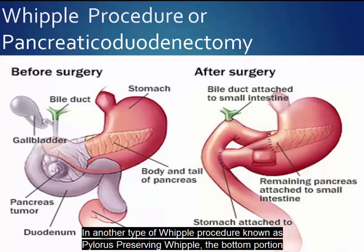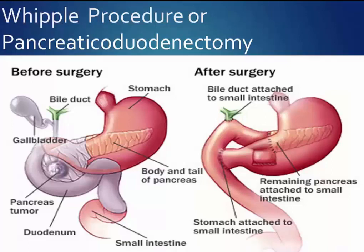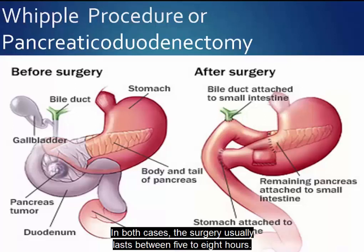In another type of Whipple procedure, known as pylorus-preserving Whipple, the bottom portion of the stomach or the pylorus is not removed. In both cases, the surgery usually lasts between 5 to 8 hours.